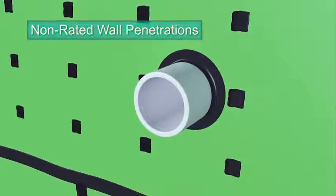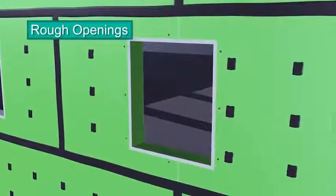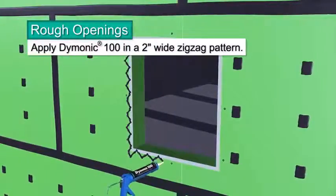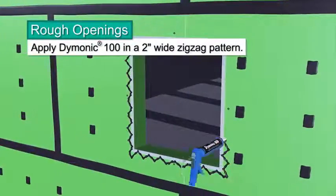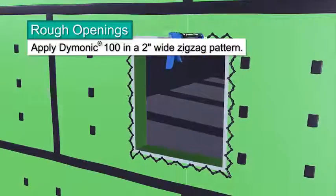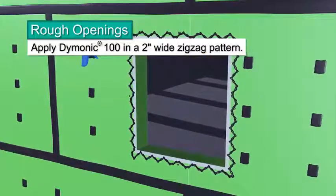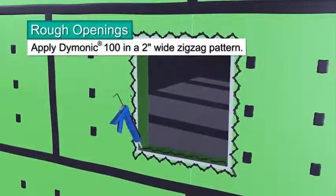Rough openings are detailed in a similar fashion as outside corners. On the face of the exterior sheathing, apply beads of Dimonic 100 sealant in a 2-inch wide zigzag pattern around the perimeter of the panel's rough opening. In the same manner, apply the sealant to the sill, jams and head.